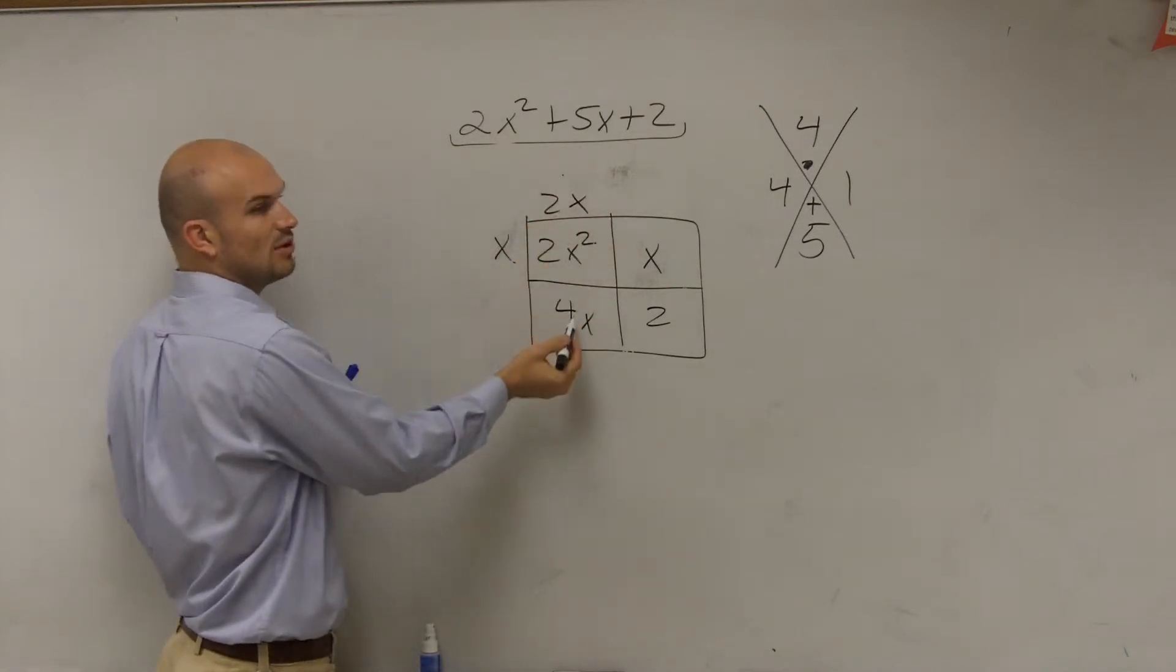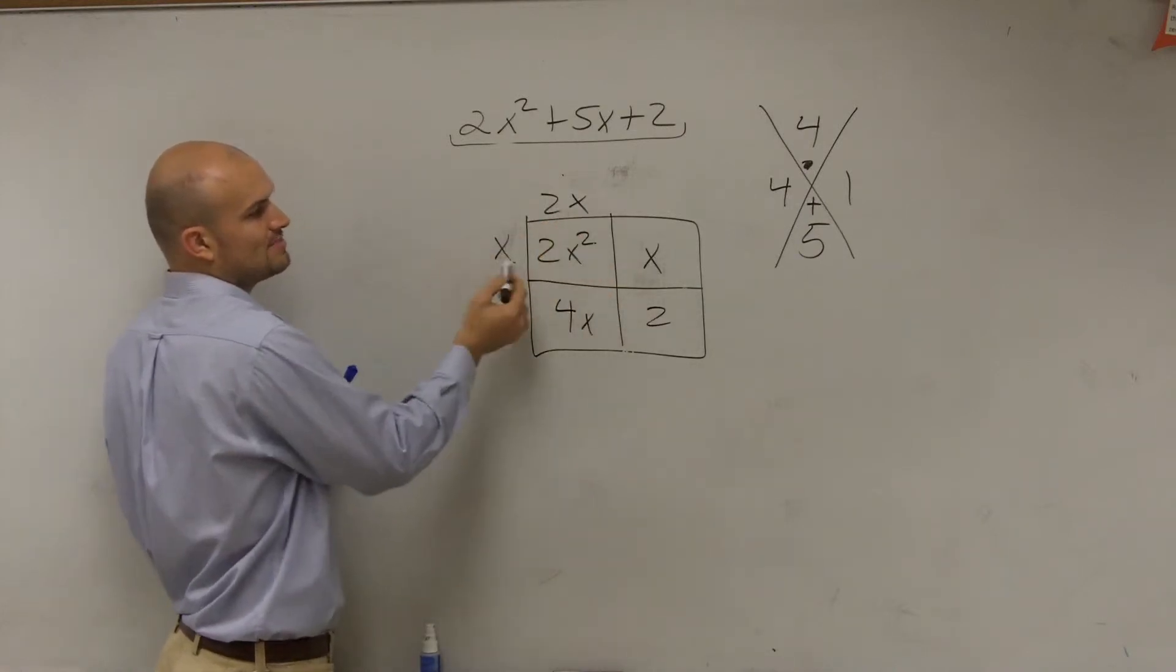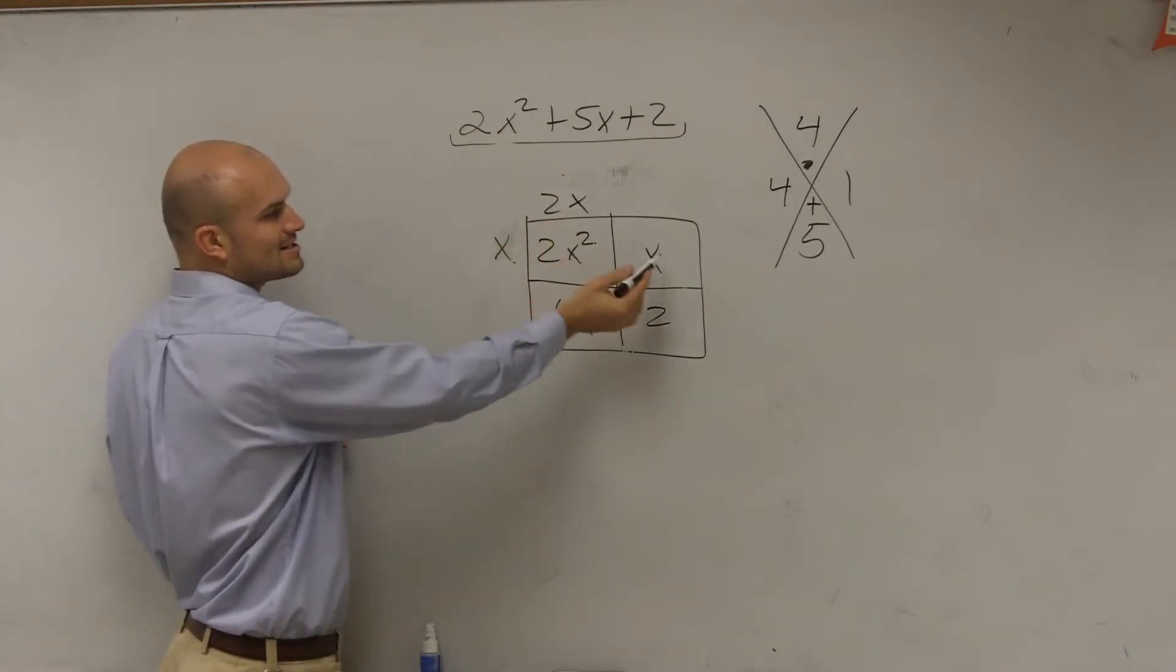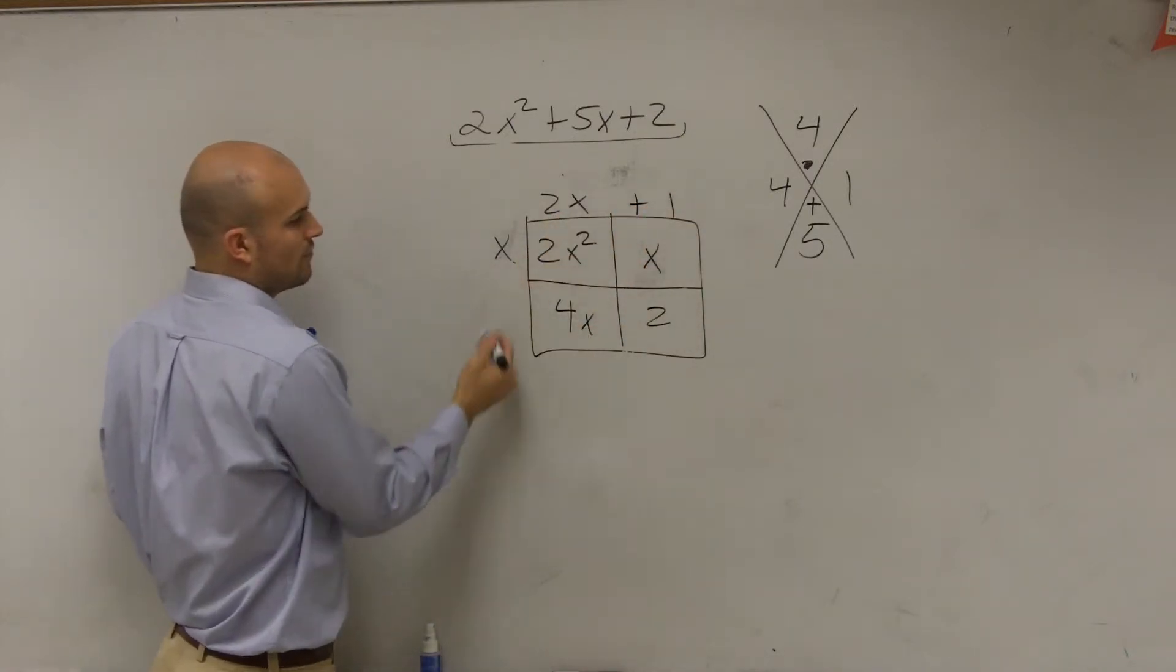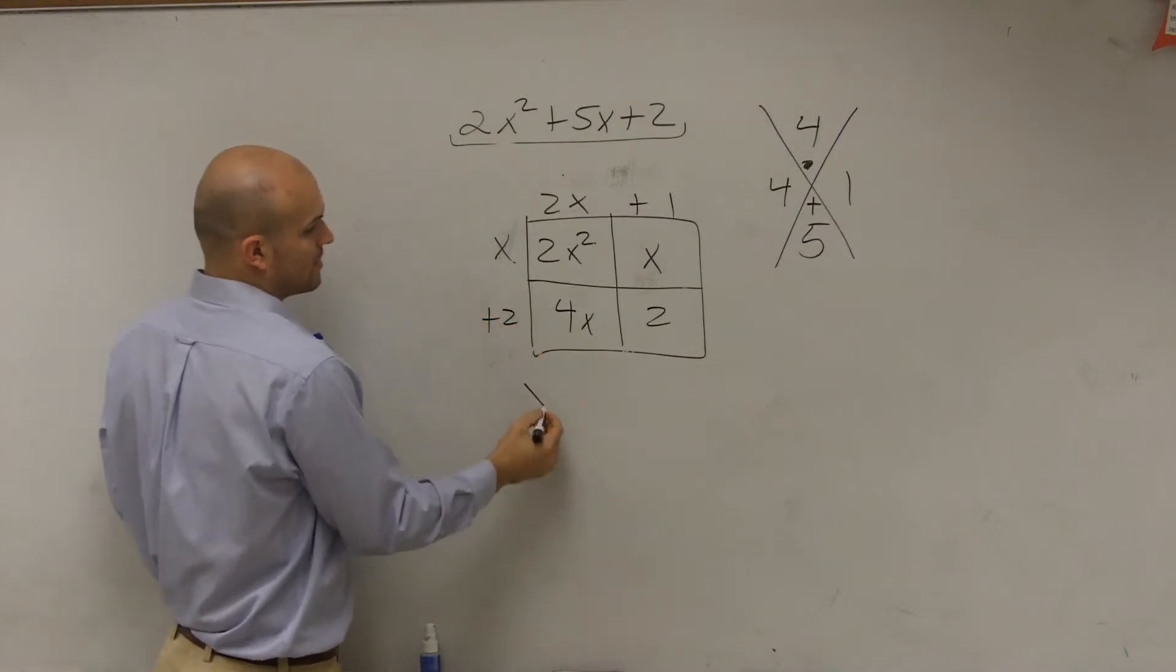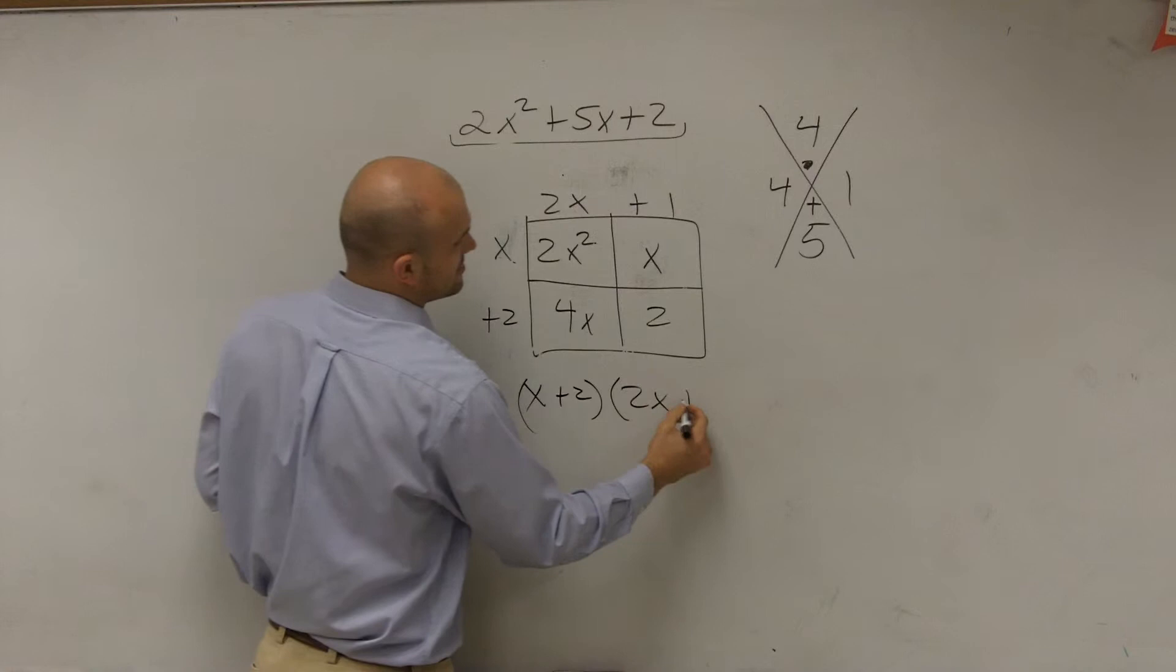Because 2x divides into both of these, and x divides into both of those. So 2x times x is 2x². x times what gives you x? Plus 1. 2x times what gives you 4x? Plus 2. Therefore, you have (x + 2)(2x + 1).